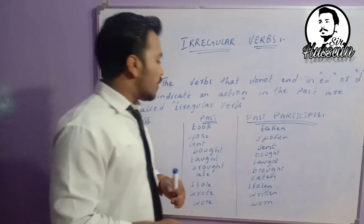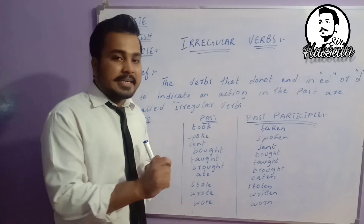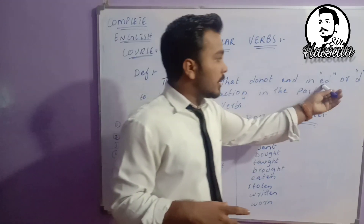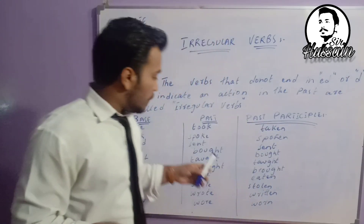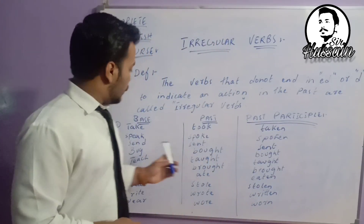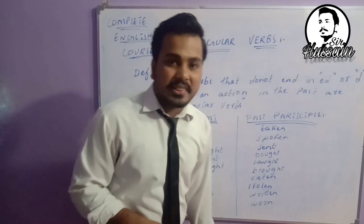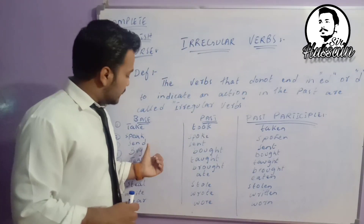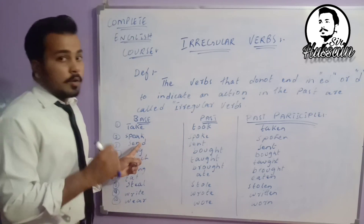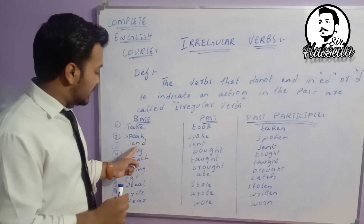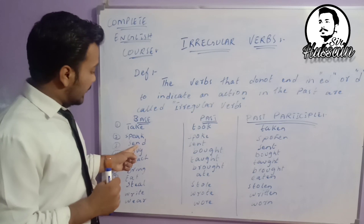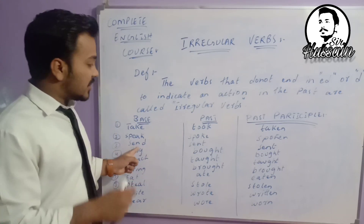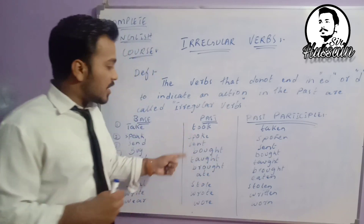Number two: 'speak' — the second form is 'spoke' and third form is 'spoken'. 'Ed' is not coming, so it is an irregular verb: speak, spoke, spoken. Number three: 'send' — the second form is 'sent', not 'sended'. Most students make mistakes writing this. The second form is 'sent' and the third form is also 'sent'.